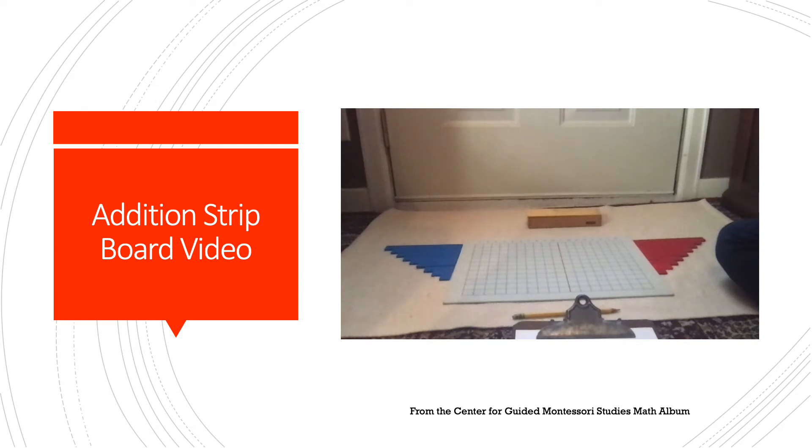Hello everyone, this afternoon I want to talk to you about the material that you see in front of me on the rug. This is called the addition strip board and it comes after the child has worked with dice addition or bead bar addition. It's another way for the child to practice their addition facts. Let's start by going over the material itself.